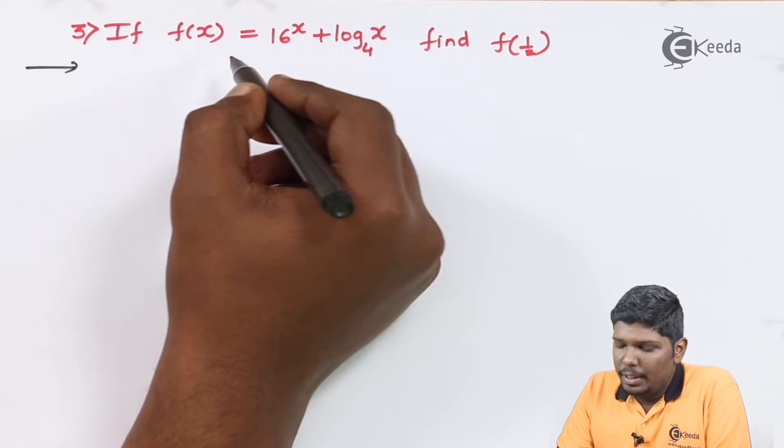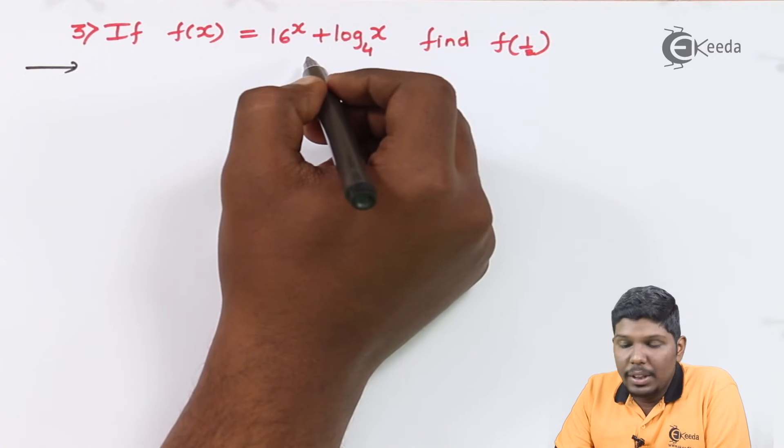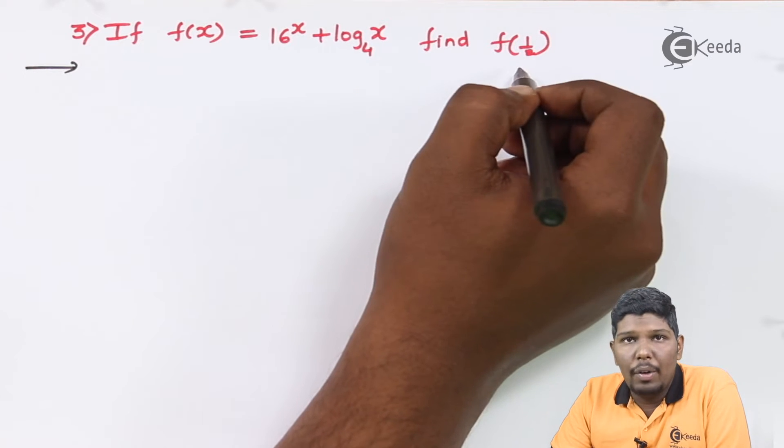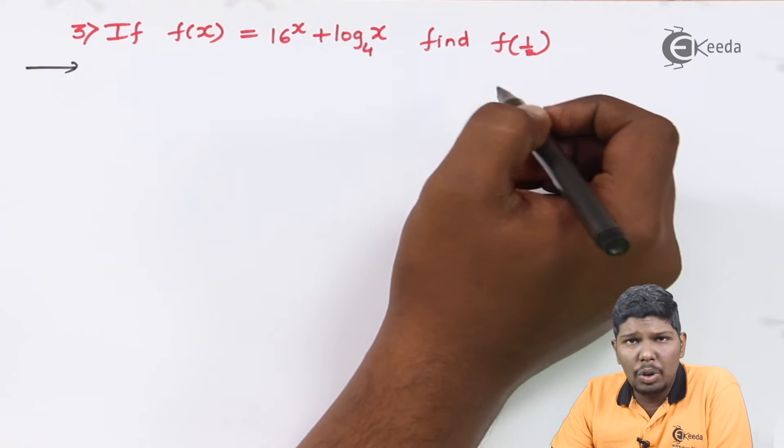Now, the problem goes: if f(x) equals 16 raised to x plus log x to the base 4, find f of 1/2. To solve this problem,